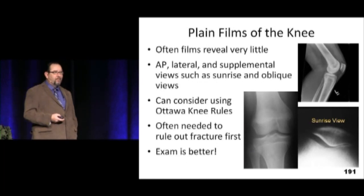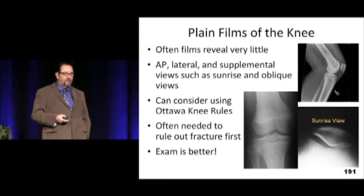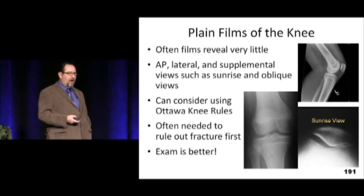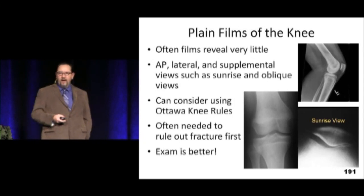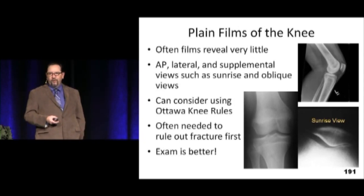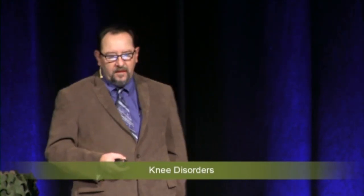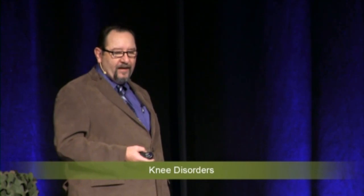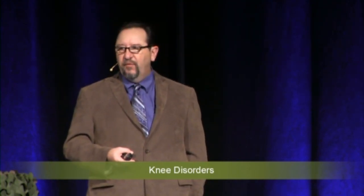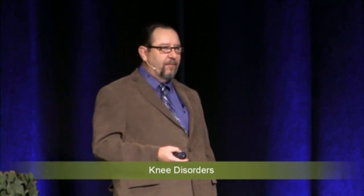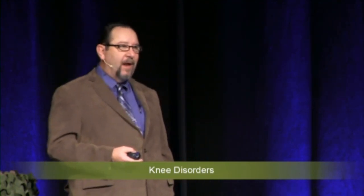Plain films of the knee are probably among the most useless films. If you palpate the bony structures and the patella doesn't hurt, the femoral condyles don't hurt, and the tibia and proximal fibula don't hurt, you pretty much know those films are going to be negative with the possible exception of a radiographic effusion. You need an AP and lateral minimum. Some places add obliques or a sunrise view, but routinely obtaining five views is probably not necessary — your radiologist will have different protocols.